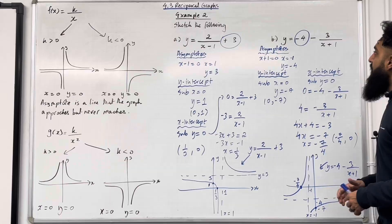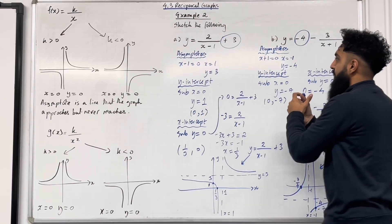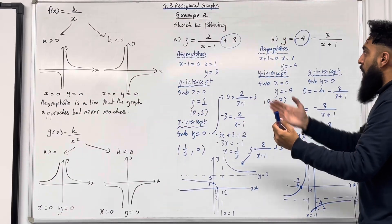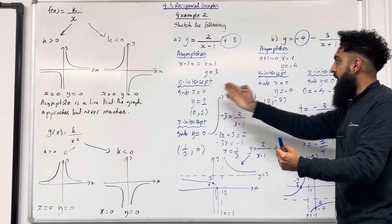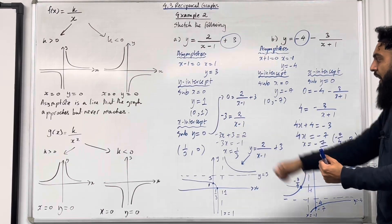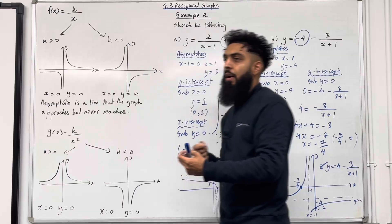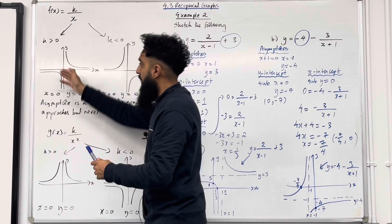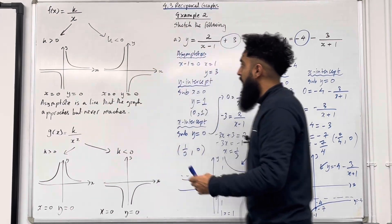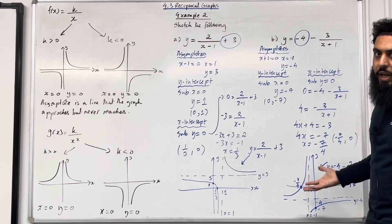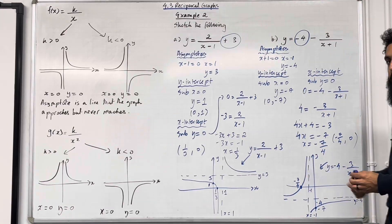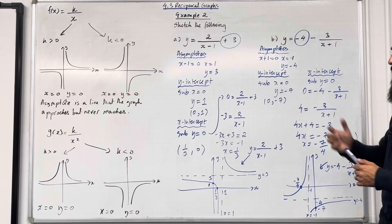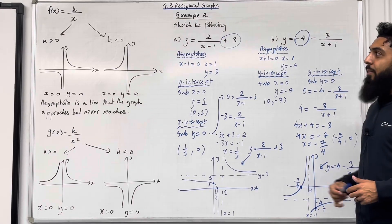When you have these type of reciprocal functions, which are transformations of the original reciprocal function, here is the step-by-step process: work out the asymptotes, work out the y intercept, work out the x intercept, identify the shape of the graph which is dependent on the numerator — is it positive or negative? If positive, one shape; if negative, the flipped shape. Once you've got all that information, you can go ahead and simply sketch the graph. If you found this video useful, please subscribe, leave a like, leave a comment, and turn on the notification bell.